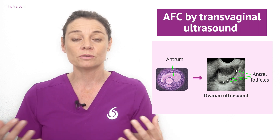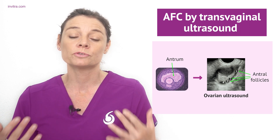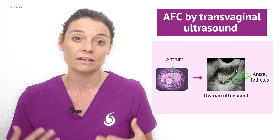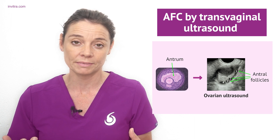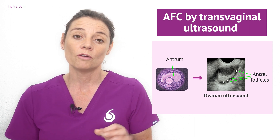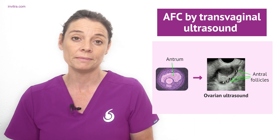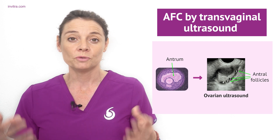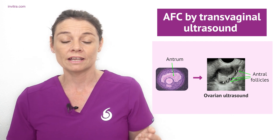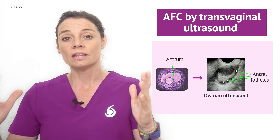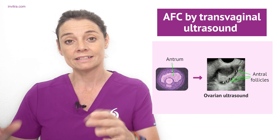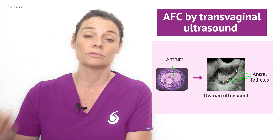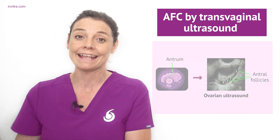This allows antral follicles to be visualised in an ultrasound examination, and indeed they can be one to two millimetres in diameter. So, using an ultrasound, the specialist can visualise the antral follicles and actually count them.